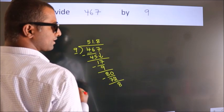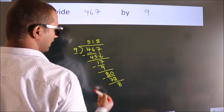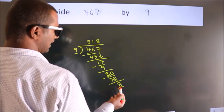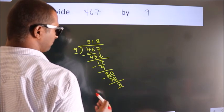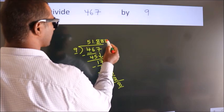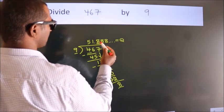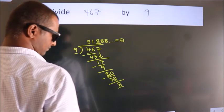You observe here we had 8 and we got 8 again. That means this number keeps repeating. So this is our quotient. Thank you.